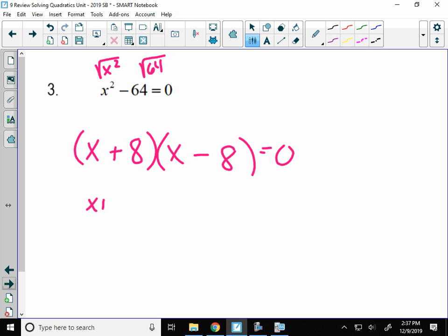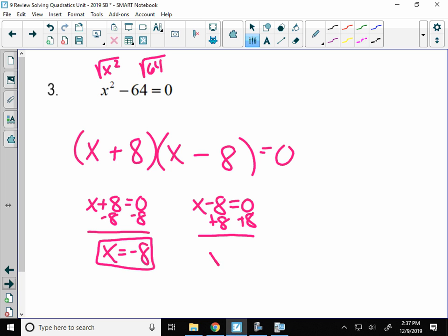From there, just like the other problems, I set both factors equal to 0, and solve for x. So my one factor is going to be negative 8, and then here I add 8, so you get a positive 8. So that's solving by factoring.